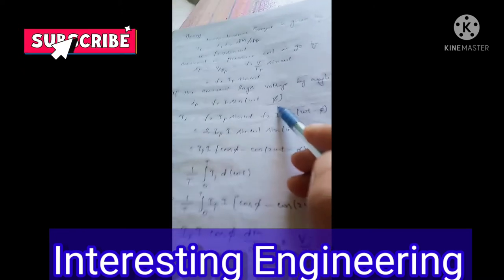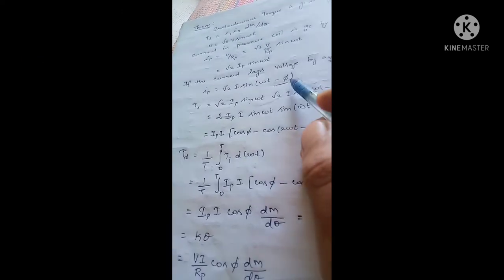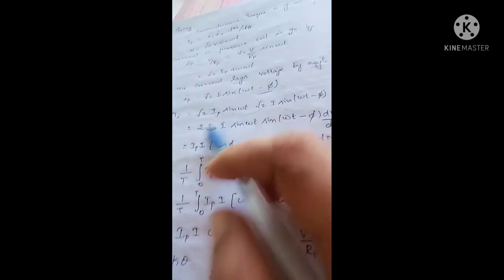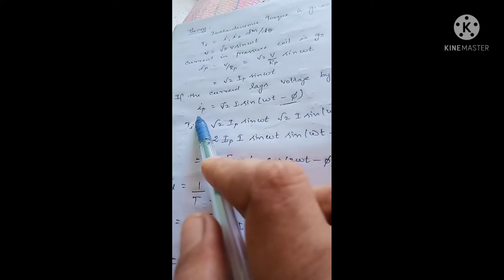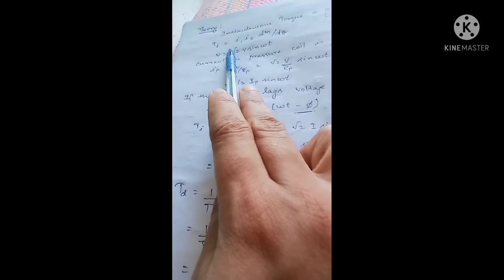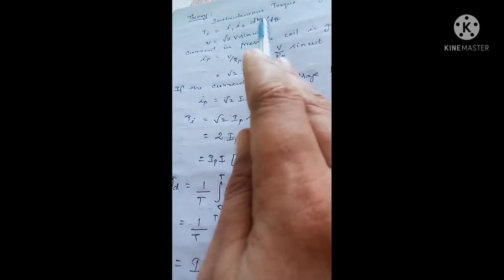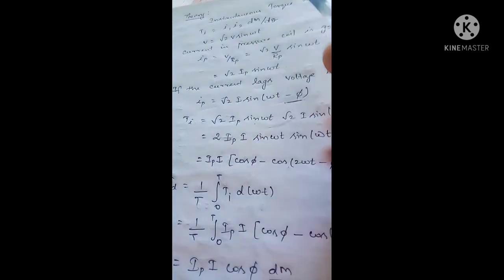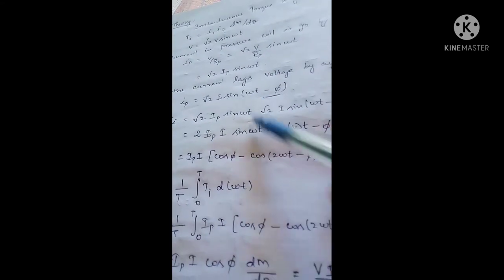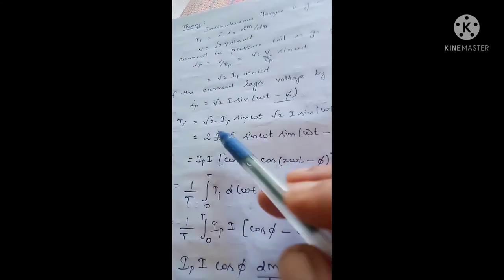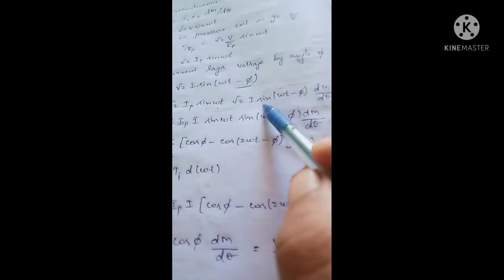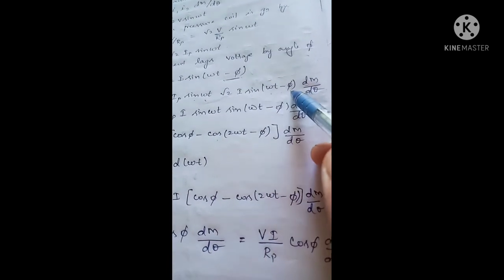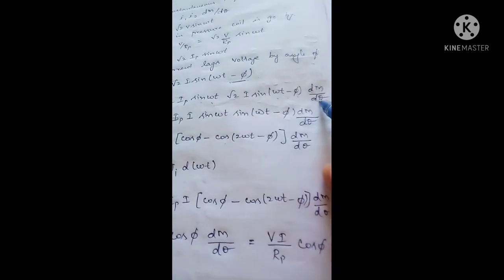Now we derive the deflecting torque equation. In our Ti equation we have I1 · I2 · dM/dθ. Substituting the current expressions: Ti = [√2 · Ip · sin(ωt)] × [√2 · I · sin(ωt − φ)] · dM/dθ, where the first term is the current through the current coil and the second is the current through the pressure coil.